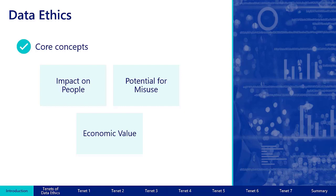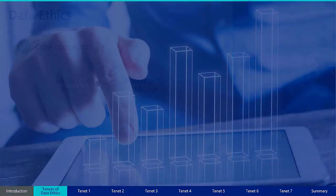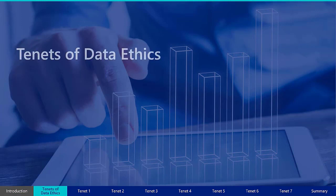As employees of Texas state agencies and institutions of higher education, it is our responsibility to have a foundational understanding of the basic tenets of data ethics that go beyond these core concepts, so we may practice ethical behaviors when working with data. The Federal Data Strategy outlines seven tenets around the ethical use of data, and each tenet should be considered at every stage of the data lifecycle, from the creation or acquisition of data, to processing data, and using it to make business decisions, and even when disposing of data.